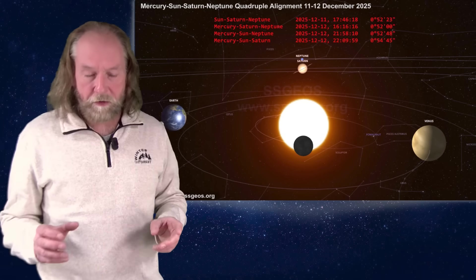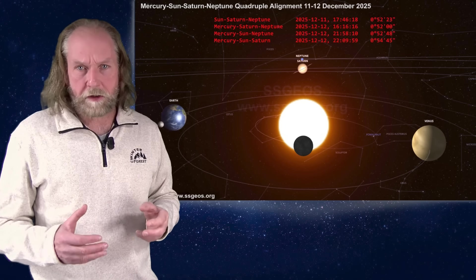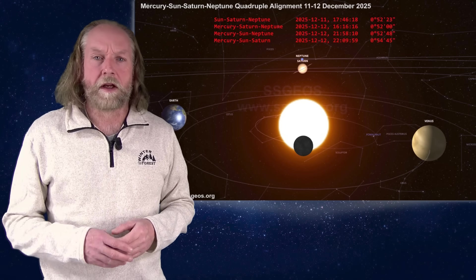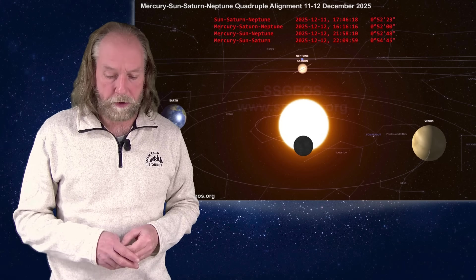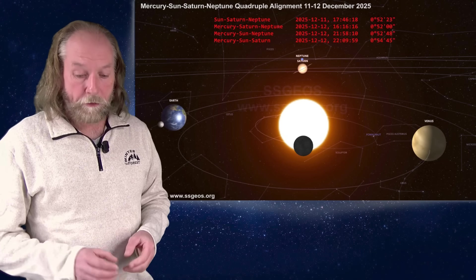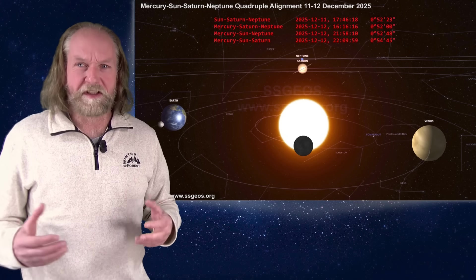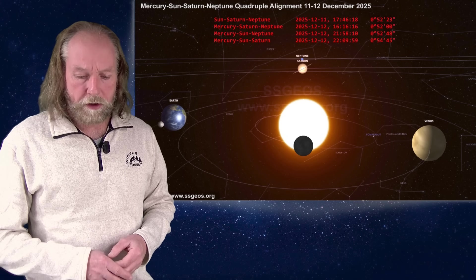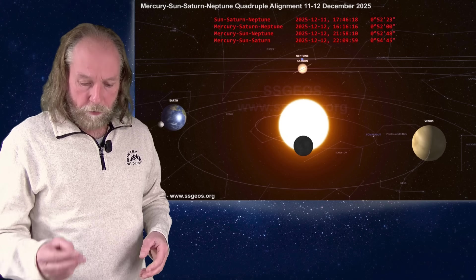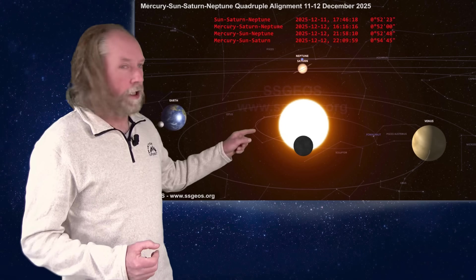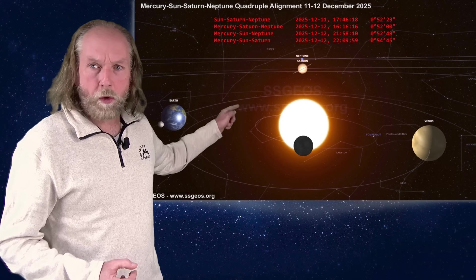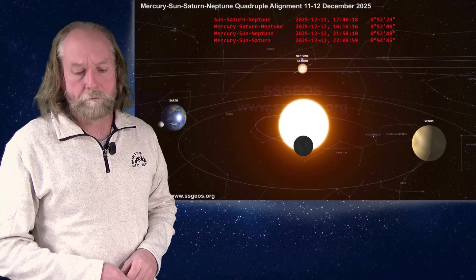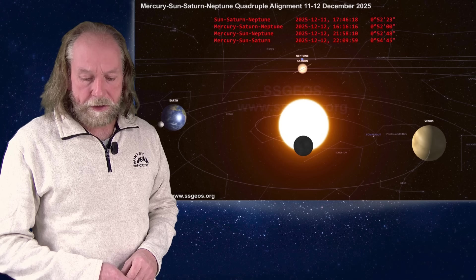And this grand conjunction with Sun-Saturn-Neptune repeats itself every 36 years approximately. So the last time was in 1989. Now this time, we have six planetary conjunctions in total, but four of them are directly caused by a quadruple conjunction, because Mercury, as we see here in front of the Sun, is actually joining the grand conjunction. And that's noteworthy.